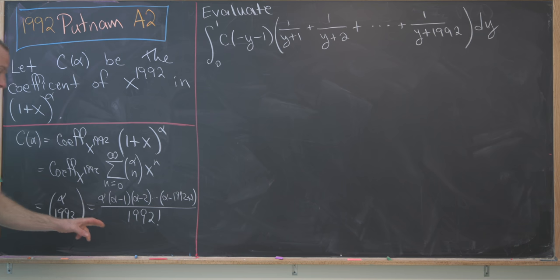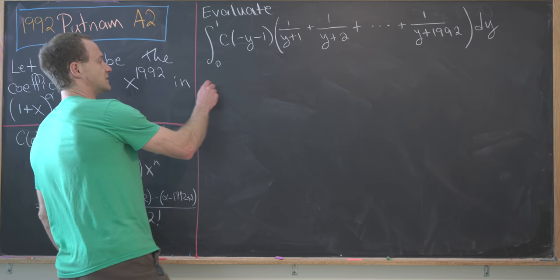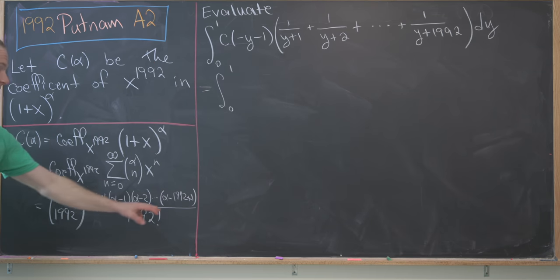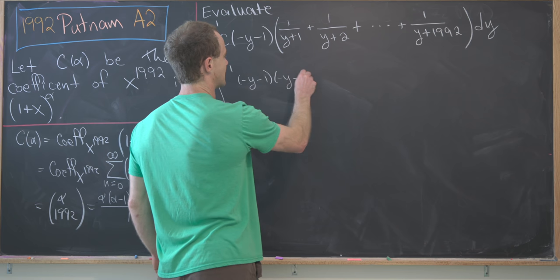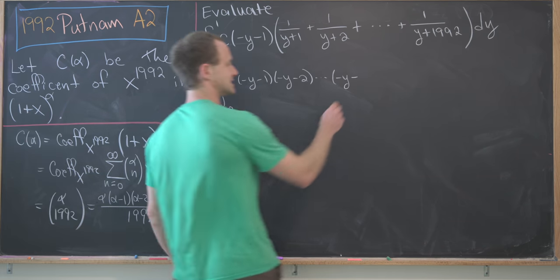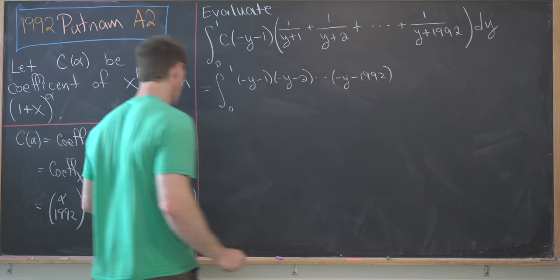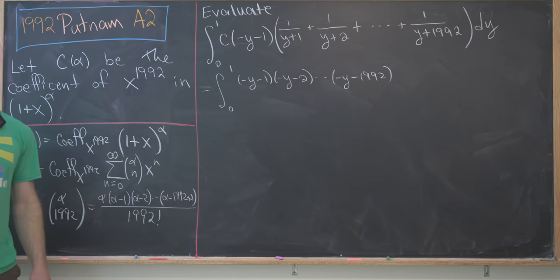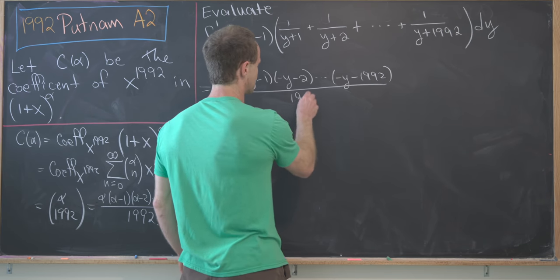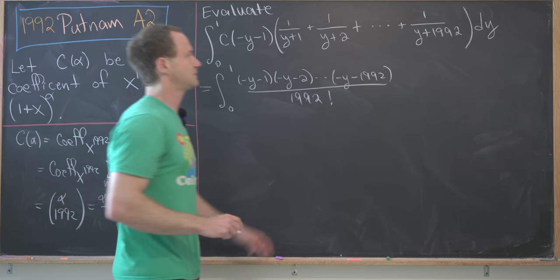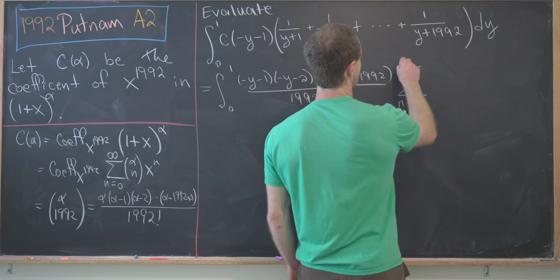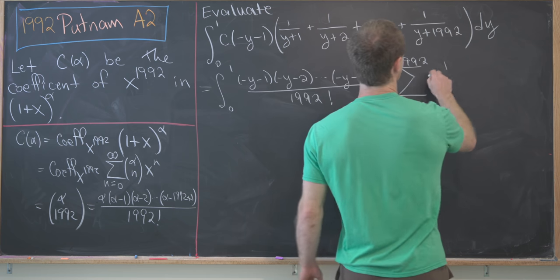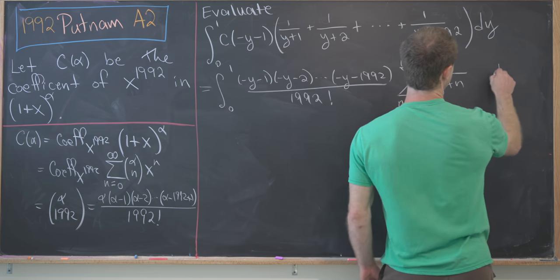So now we can rewrite this integral using this expansion. Now we've got the integral from 0 to 1 of this object where we plug in -y-1 for α. That's going to give us (-y-1)(-y-2) all the way to (-y-1992). What about this plus 1? Well, that was gobbled up by the minus 1 built into this. And now we have this all over 1992 factorial. Then I'll collapse all of this into a sum. This is the sum as n goes from 1 up to 1992 of 1/(y+n), then we have dy.